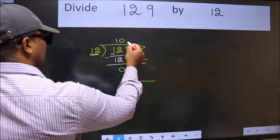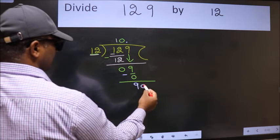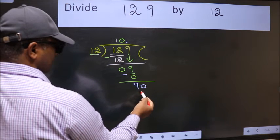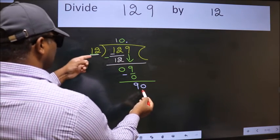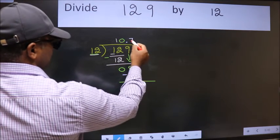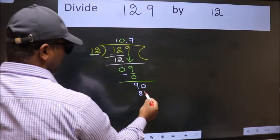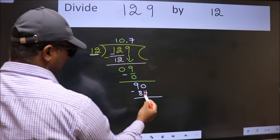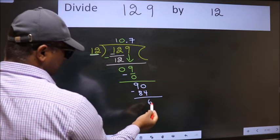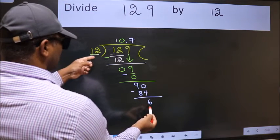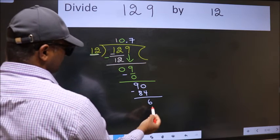So now we can put dot and take 0. So 90, a number close to 90 in 12 table is 12 times 7, 84. Now we subtract, we get 6.